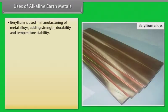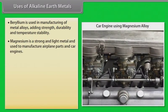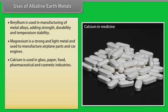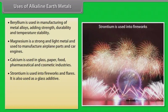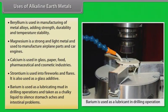Uses of alkaline earth metals. Beryllium is used in manufacturing of metal alloys, adding strength, durability and temperature stability. Magnesium is a strong and light metal, used to manufacture airplane parts and car engines. Calcium is used in glass, paper, food, pharmaceutical and cosmetic industries. Strontium is used in fireworks and flares, and also as a glass additive. Barium is used as a lubricating mud in drill operations, and is taken as a chalky liquid to relieve stomach aches and intestinal problems.